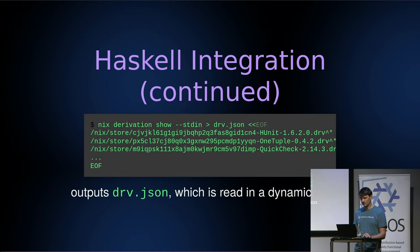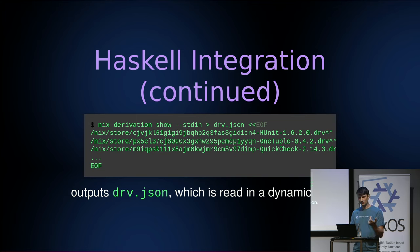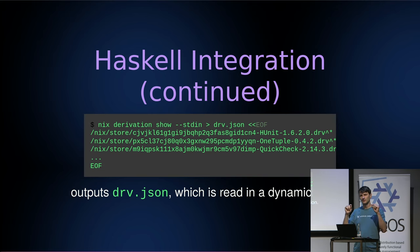We feed this into a nix derivation show command, which gives us a drv.json file. This is exactly the dynamic input for our dynamic action. We are able to look into those dependencies and create actions in order to build all those different derivations that are needed for any of the top-level Haskell libraries we depend on in our project.